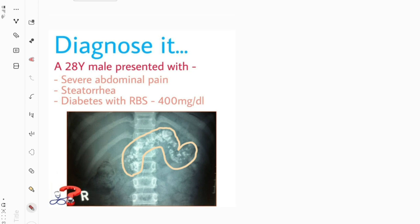Now let's diagnose it. The pathology in this case is clearly around the pancreas, and you can see pancreatic tissue calcification along with the history of abdominal pain. This shows there is chronic inflammation of the pancreas, because this calcification does not develop in acute pancreatitis — this is a feature of chronic pancreatitis. The patient has also developed diabetes mellitus as a consequence. The diagnosis is fibrocalculus pancreatitis.